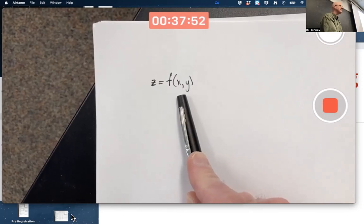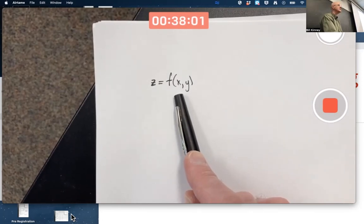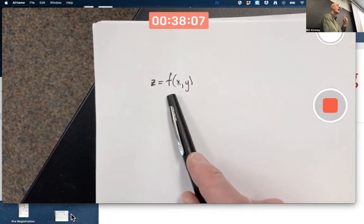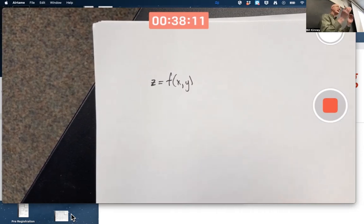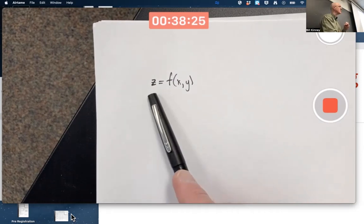Meaning I've got more than one independent variable. This function takes two numbers as input and gives you one number as output. Though the two numbers that are input are thought of as one point, the point X, Y. So it's still a single thing, effectively, going into the function, but it's got two coordinates. But you get a single number out.